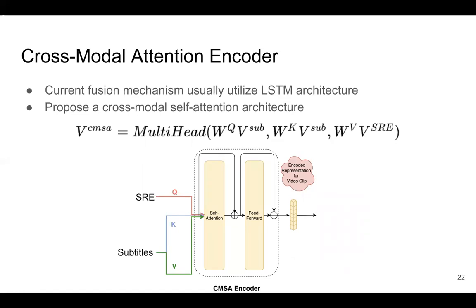So why not use the self-attention architecture as a fusion architecture? That's why we proposed the cross-modal attention encoder. Inspired by self-attention, our cross-modal attention encoder can better fuse multi-modal features. In the original self-attention, query, key, and value all come from the same input. But in our cross-modal attention encoder, we treat the query as our proposed semantic-rich embedding, and assign the key and value as the subtitle features from the videos. We then fuse them with the self-attention architecture to get the representation of the input video clip. We found the cross-modal attention encoder can better fuse multi-modal features and improve performance.